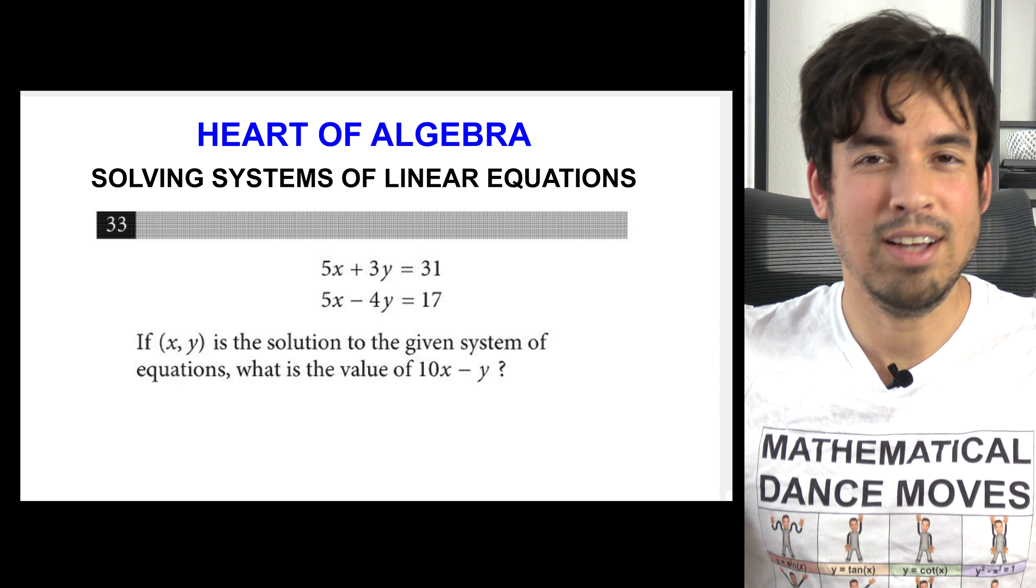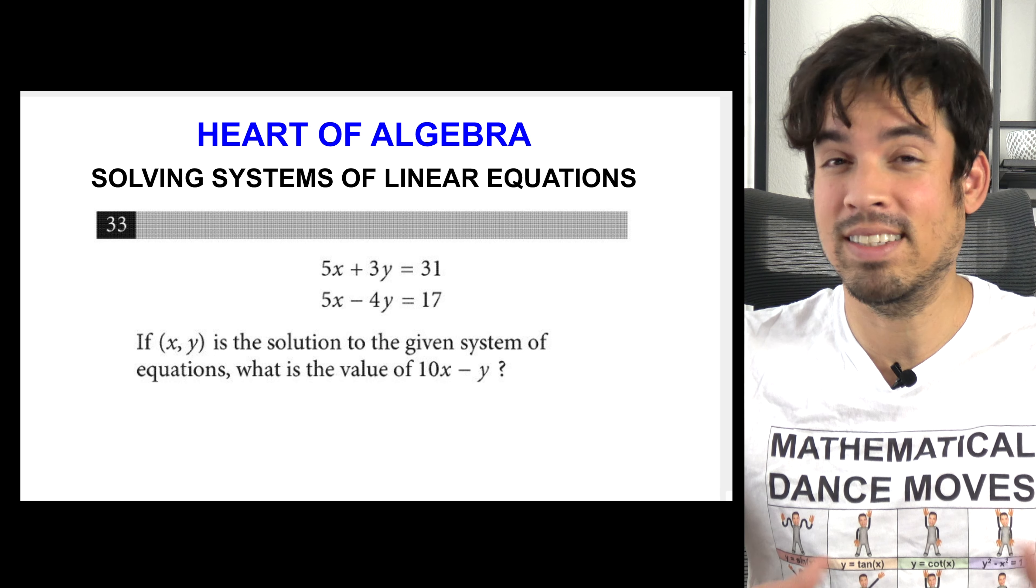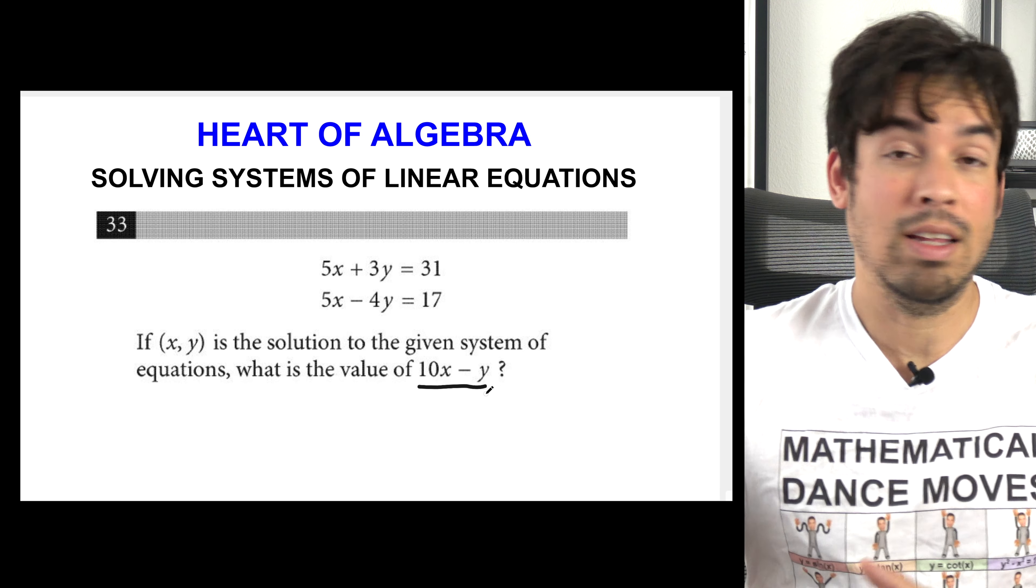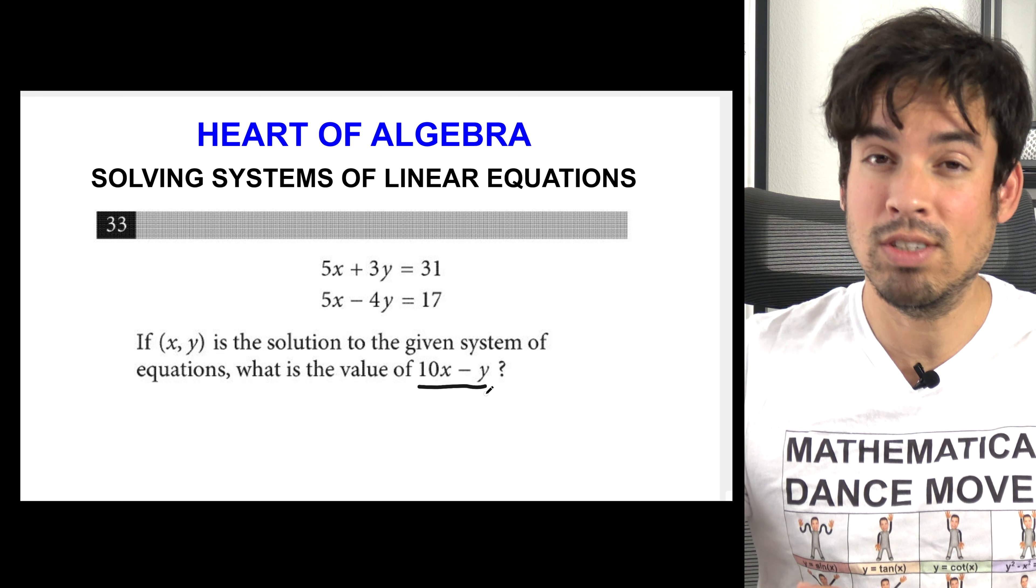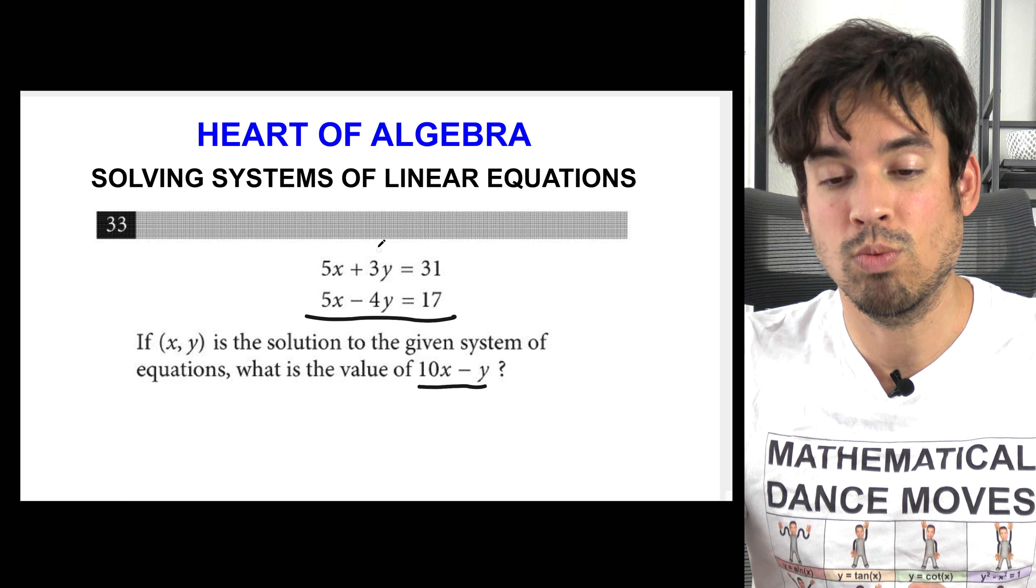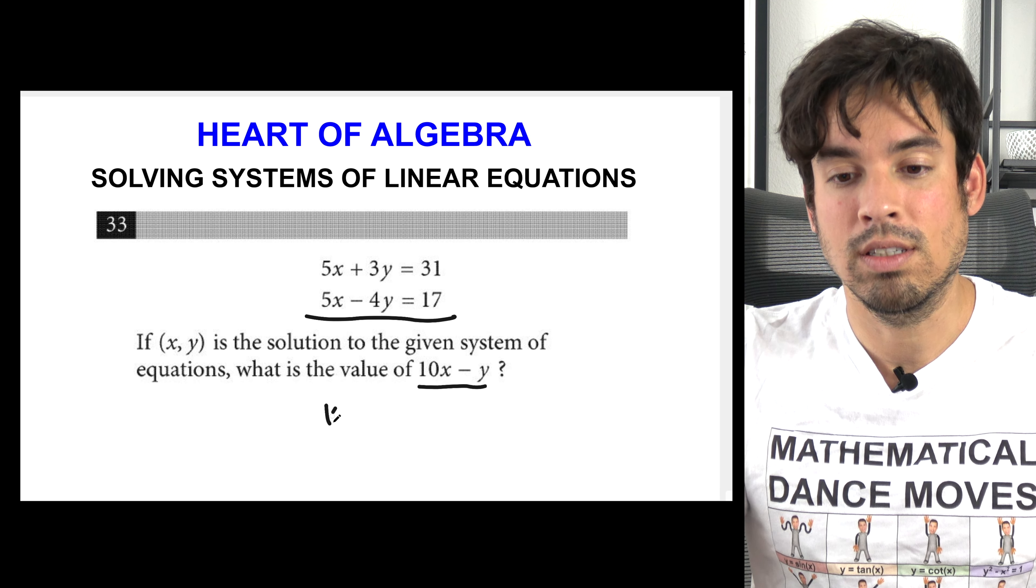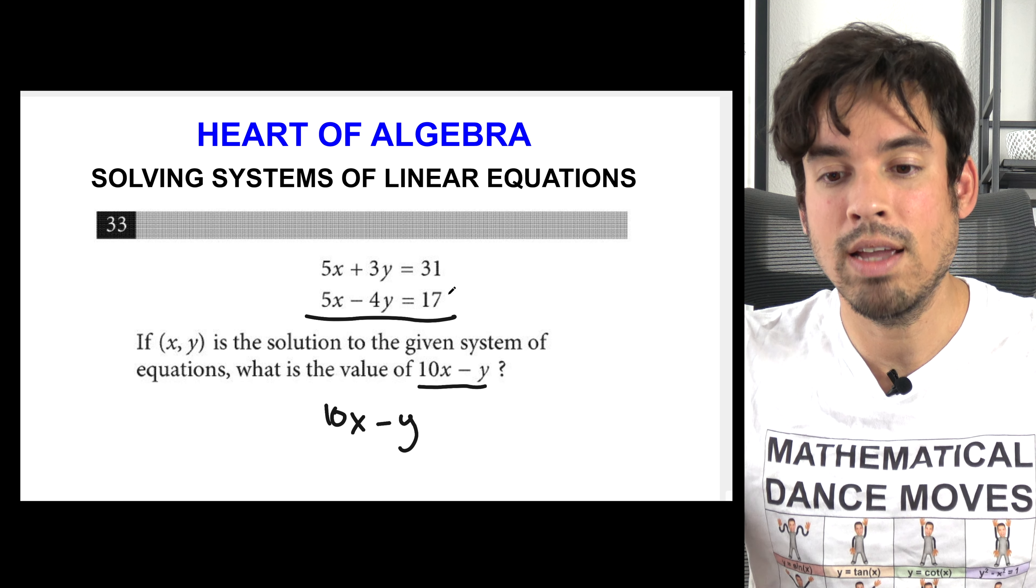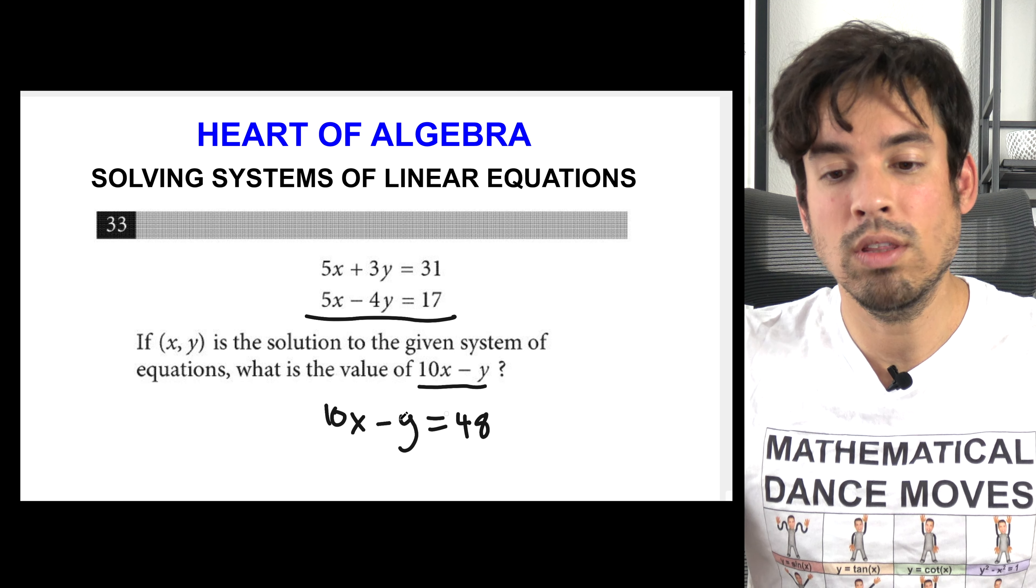The hints the College Board gives you on these systems of equations is truly special because if you spot them it could save you so much time. So what are they asking? They're asking you again the value of 10x minus y, not the value of x, not the value of y, but that special expression 10x minus y. So when you see something like this you really got to pause and look. You don't even have to manipulate the equations whatsoever, just add them straight up. 5x plus 5x gives you 10x, 3y plus negative 4y gives you negative y, and then on the right side 31 plus 17 gives you 48. They want the value of 10x minus y, you got it right there and you're done.